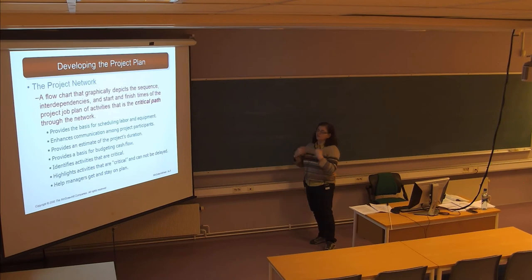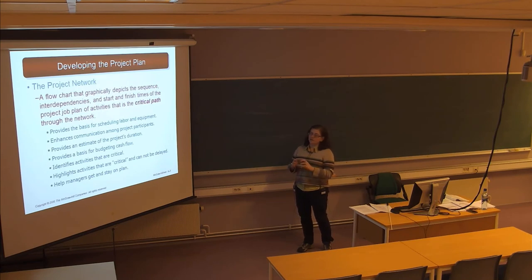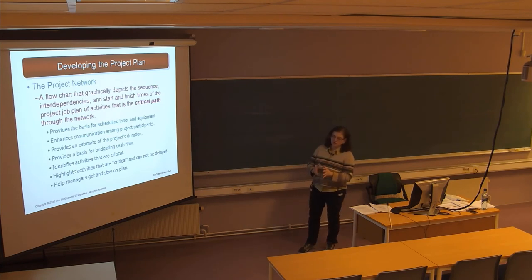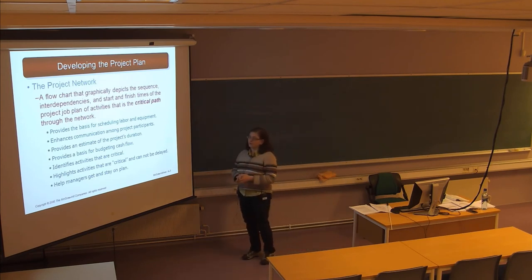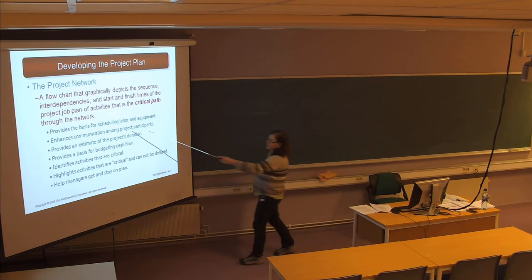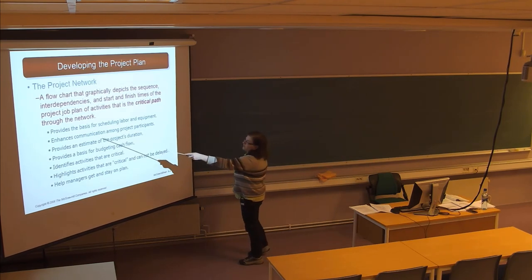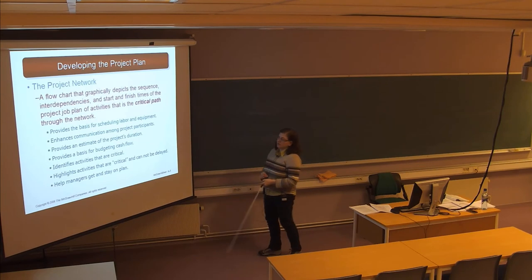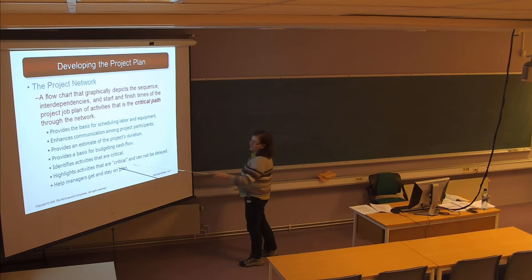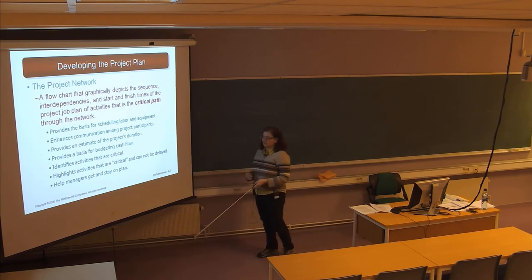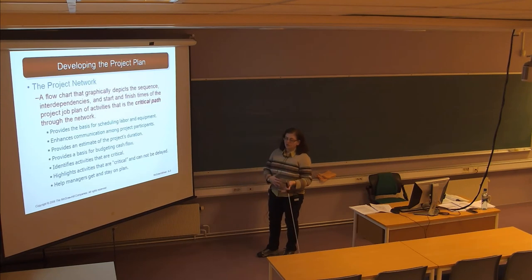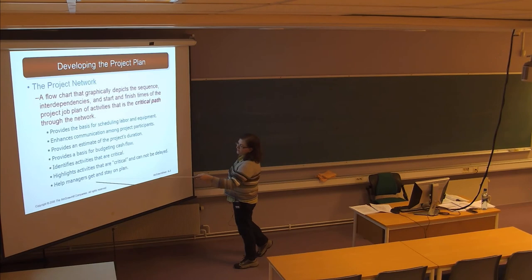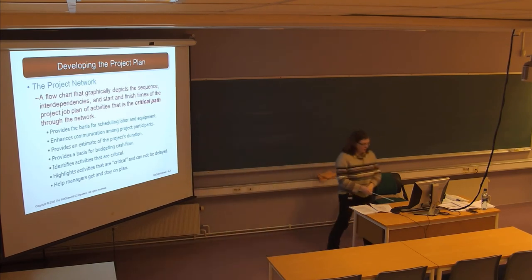This is a visualization of the flow of activities, and it allows the project manager to be very clear about when is the earliest starting time for a certain activity and when is the latest starting time. It allows them to schedule labor and equipment, communicate with everyone involved in the project, estimate the duration of time for the entire project, use it as a basis for budgeting, identify what the critical activities are, and determine what cannot be delayed without delaying the whole project completion time. It's used to stay on target and keep up with the current plan.